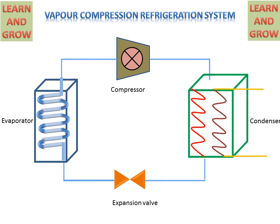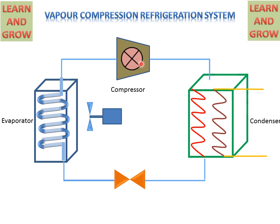Now we see the working of Vapour Compression System. This fan is for supplying warm air to the Evaporator. At first, the Compressor will start working and it will increase the pressure and temperature of the gas — Freon — which is used in the Vapour Compression Refrigeration System for cooling purpose.